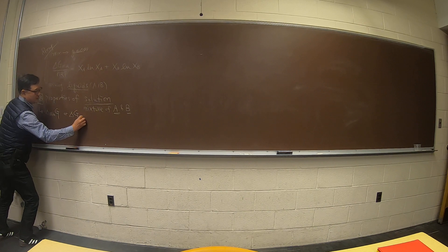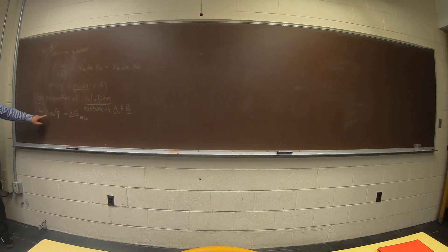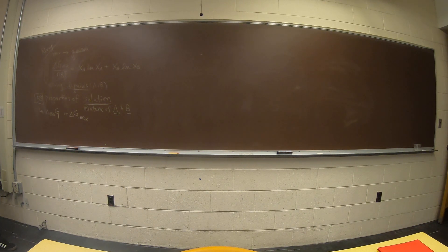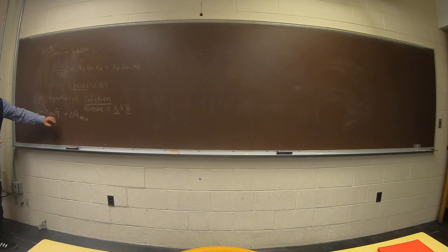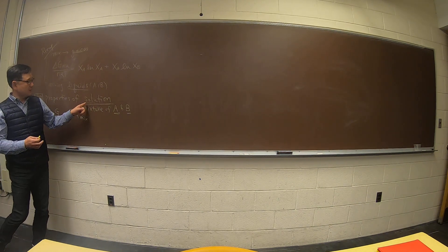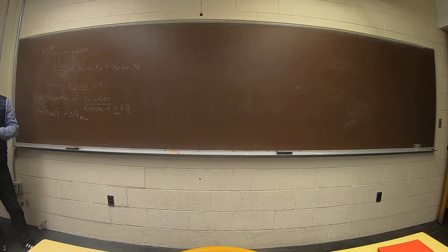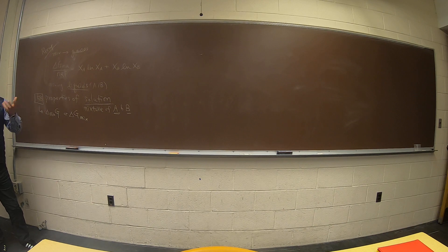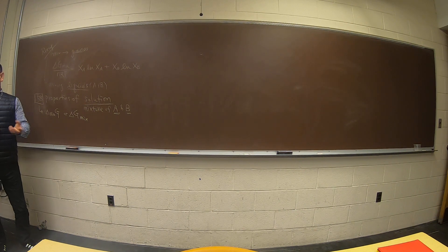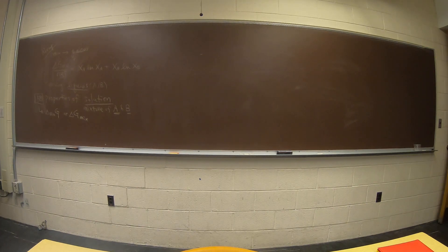Sometimes I use delta G mix; textbooks use delta mix G — either way it is about the mixing contribution, not even considering the reaction of A and B. Whenever you do a reaction and produce a product, and when you mix A and B, you get a natural product. For example, in fermentation you have water and ethanol, you want to distill it out and know how many distillation steps you need to purify or concentrate the alcohol.